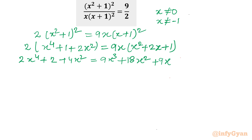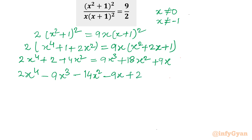Taking all terms to the left, the equation becomes the degree-4 polynomial: 2x⁴ minus 9x³ minus 14x² minus 9x plus 2 equal to 0.